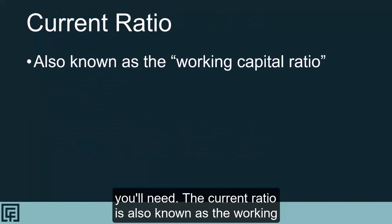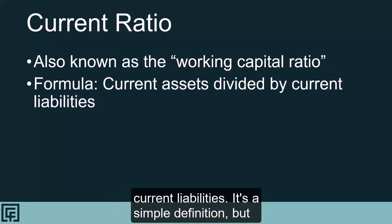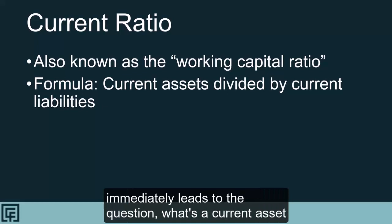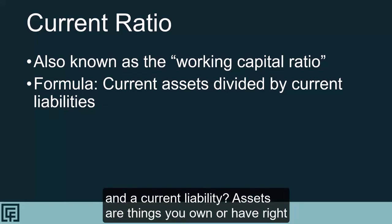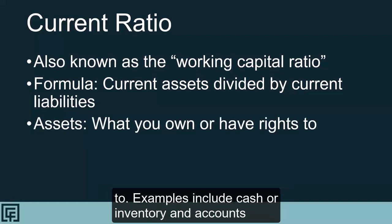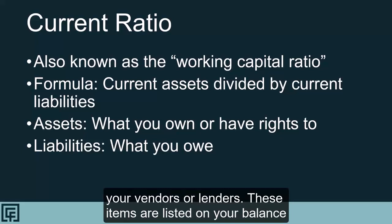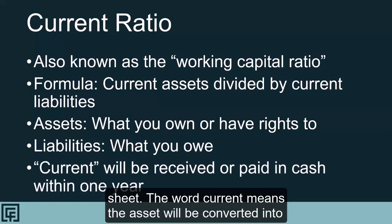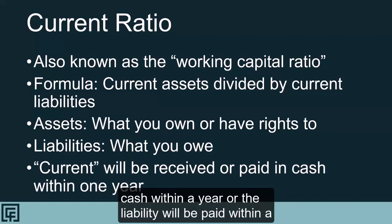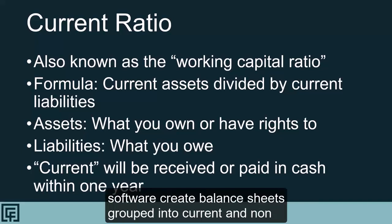The current ratio is also known as the working capital ratio. It's calculated as current assets divided by current liabilities. Assets are things you own or have a right to — examples include cash, inventory, and accounts receivable. Liabilities are things you owe, like payments to your vendors or lenders. These items are listed on your balance sheet. The word 'current' means the asset will be converted into cash within a year, or the liability will be paid within a year. Non-current assets and liabilities are all other assets and liabilities. Many accountants and accounting software create balance sheets grouped into current and non-current sections.